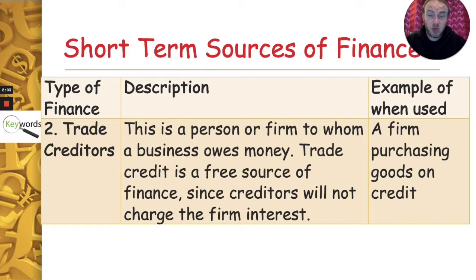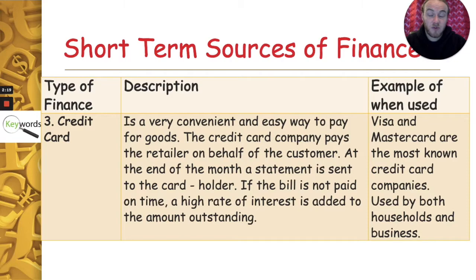Another short-term source is trade creditors — from a business point of view, this is who the business owes money to. Sometimes a business buys goods on credit, buying now and paying later, and might need a bank overdraft for that. Credit card is another one — a plastic card like Visa or Mastercard where you buy the goods now but don't have to pay until the end of the month.